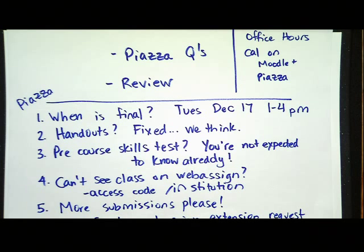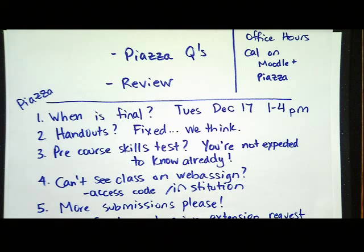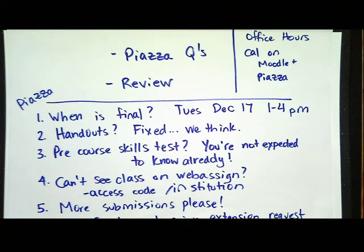If you made 110 points or more on the pre-course skills test, I've already invited you to start as a peer tutor early if you do homework 1 and 2 early. You should have an email from me if you scored that high. If you can't see your class on WebAssign, make sure you have an access code and are logging in to NC State — type NCSU, because if you log in to the wrong school, it won't show your class.